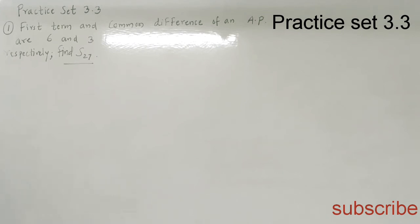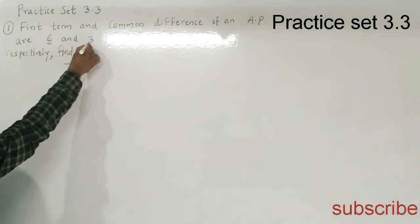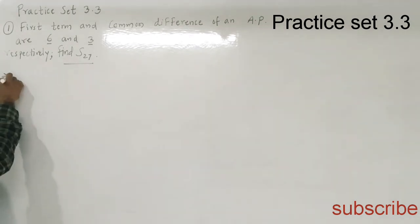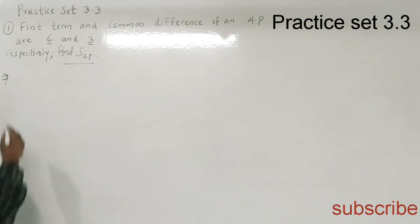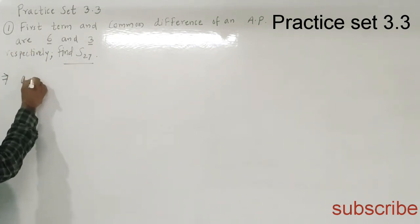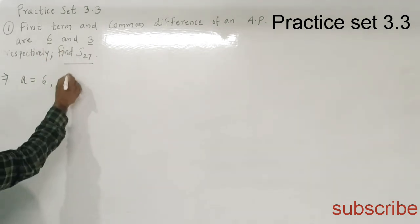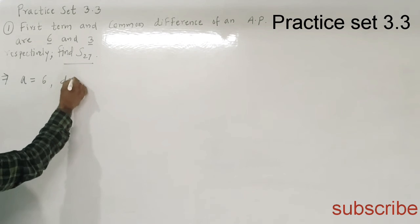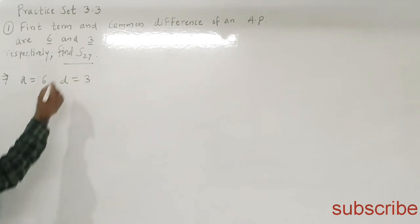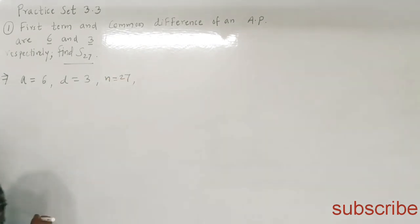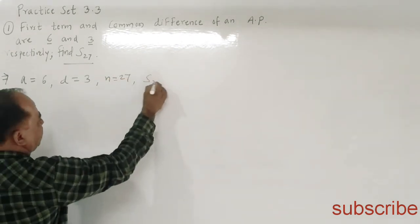First example: the first term and common difference of an AP are 6 and 3 respectively. Find S27. The given information is: first term a = 6, common difference d = 3, and we have to find S27 where n = 27.